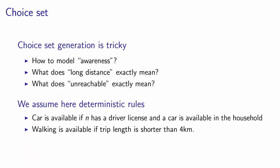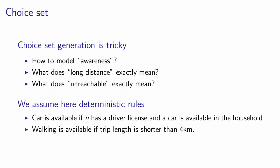In the context of our models, because we want to derive operational models, we will assume that we can identify the choice set for each individual using deterministic rules. For example, the first rule is that the car is available if individual N has a driver's license and a car available in the household — this information should be available in the data file. Another rule could be that walking is available if the trip length is shorter than four kilometers. These rules are deterministic. The availability condition is represented using an indicator delta_in, which equals 1 if alternative I is in the choice set of individual N, and 0 otherwise.